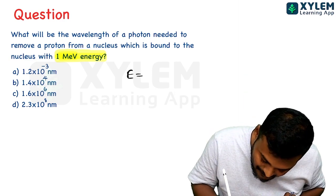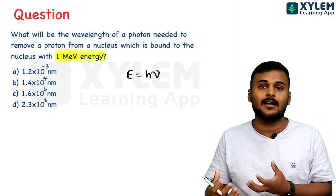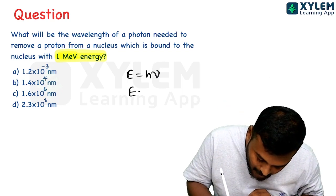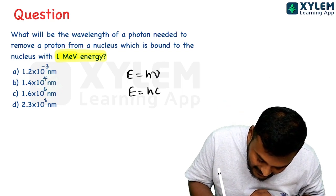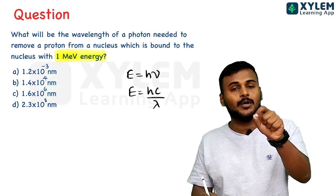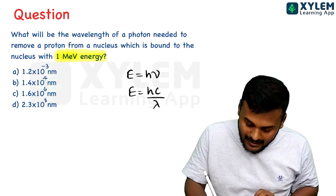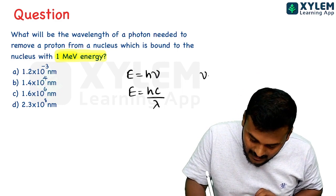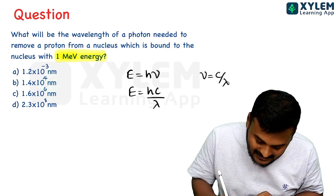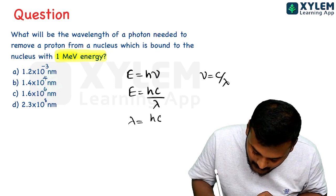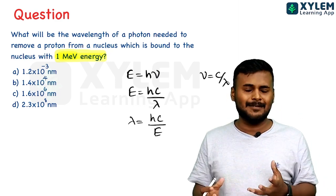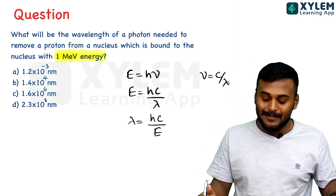The equation is E equals h-nu, which we can write as E equals hc by lambda, since nu equals c by lambda. So lambda equals hc by E.